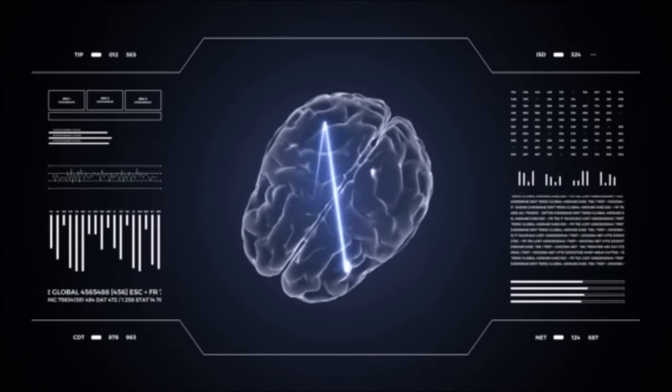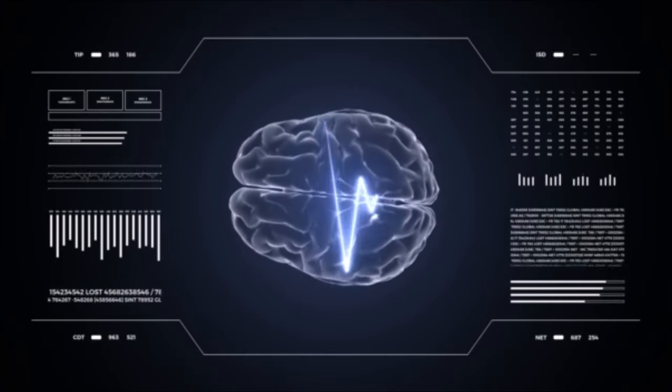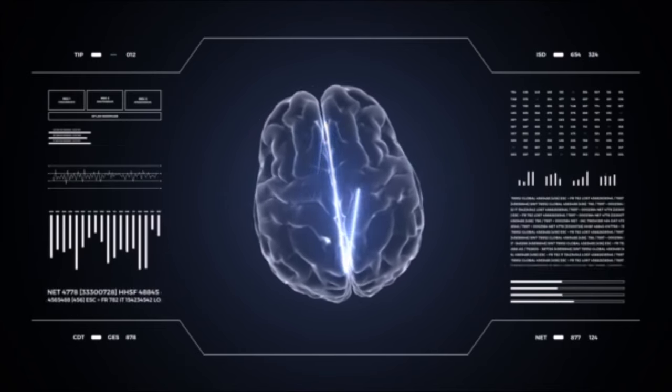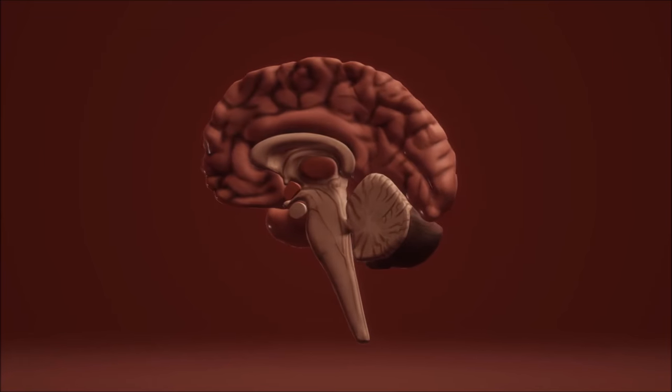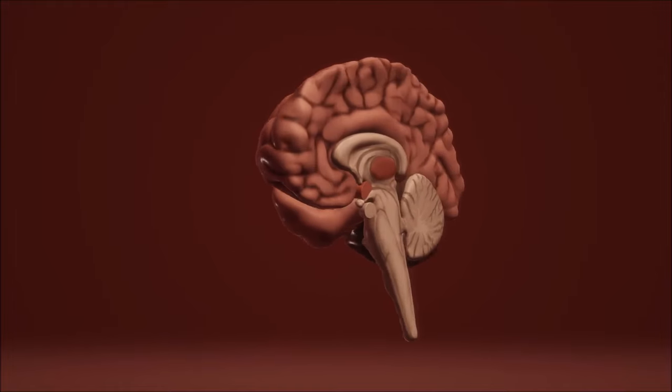The temporal lobe functions like an auditory jukebox. It processes auditory information, recognizes sounds, and stores them in memory. Additionally, a part of our language ability resides here. Therefore, when you remember your favorite song, you can say your temporal lobe is at work.